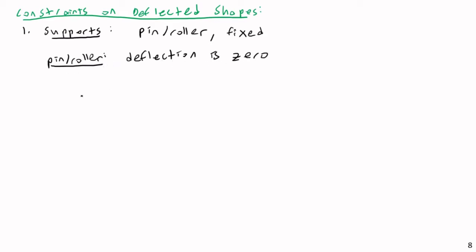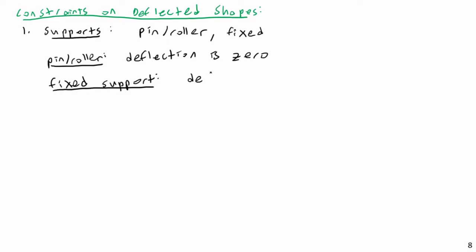If I'm looking at beams, the deflection is zero at a pin or roller. The difference between a pin and a roller is that at a pin, both the X and Y deflection is zero; at a roller, only the Y deflection — the deflection perpendicular to the surface — is zero. For a fixed support, the deflection and rotation are both zero.